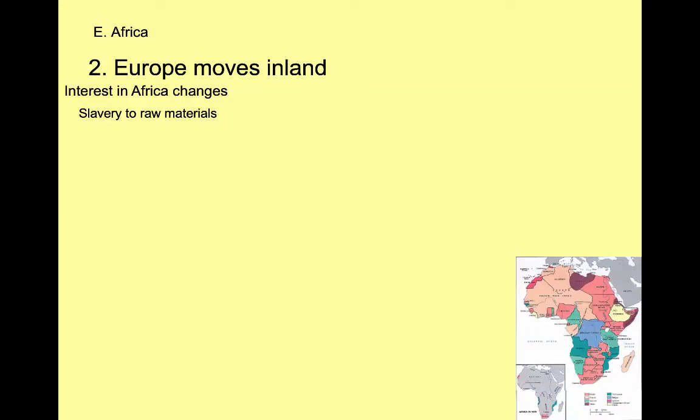So what allowed the Europeans to go from hardly any control of Africa to controlling the whole continent? Partly it's because Europeans wanted to get into Africa for raw materials. In the last time period they wanted slaves, but now, since Europe is industrialized, they want raw materials for their factories, and Africa has a lot of minerals. Another thing they want is markets — if they colonized Africans, they could force the African people to buy their goods.